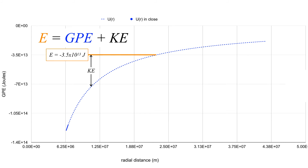At a given altitude, the vertical gap between the orange and blue lines tells you kinetic energy. Going up in altitude, you have a little less kinetic energy. Eventually you reach the point — maybe around 12,000–13,000 km — where the orange line meets the blue curve. At that point, kinetic energy is zero; you can't go any further at this energy level. That's your apogee: GPE is maximum, kinetic energy is minimum.